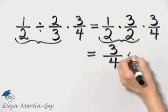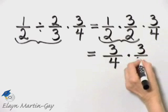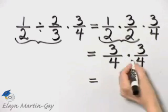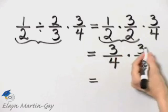And then I have times three over four, coincidentally. So how do I multiply fractions? Well, it's numerator times numerator.